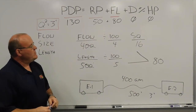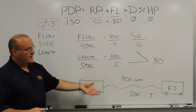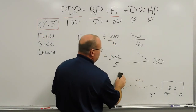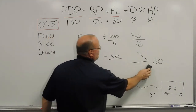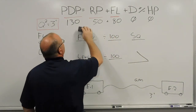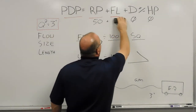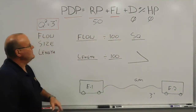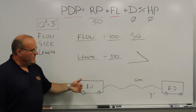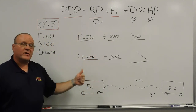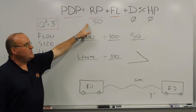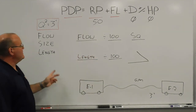We'll do another example with a different flow and a different length. We'll keep the same residual pressure because it's the same scenario — a relay operation from engine to engine, pump to pump — so we still give that pump operator at the other end 50 pounds of residual pressure to work with on top of what we're flowing.